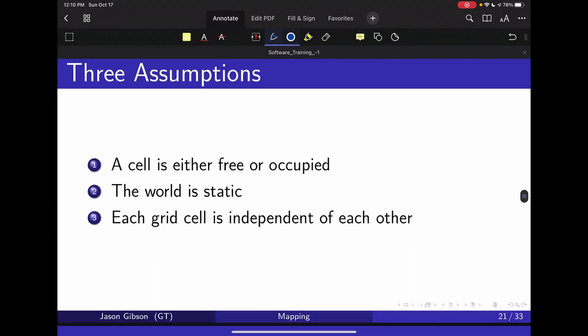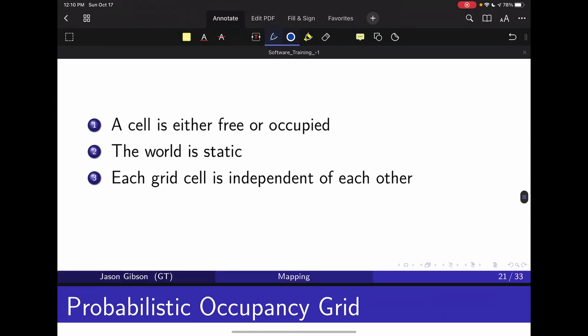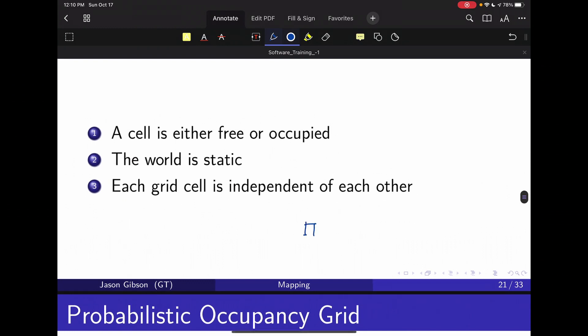The third thing is that each grid cell is independent of each other, and essentially what that means is if I have two grid cells here and this one is occupied, it does not say anything about the probability that the one next to it is occupied.